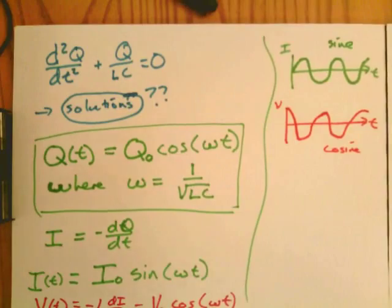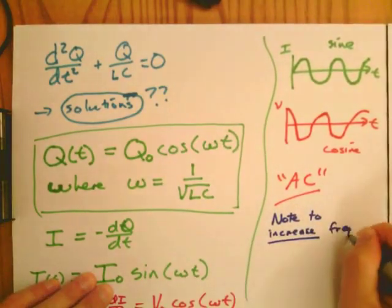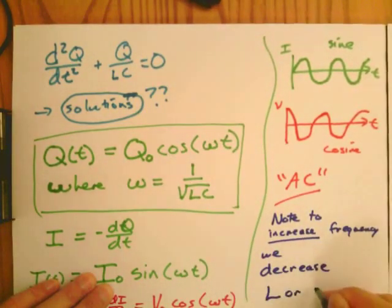So this kind of voltage is known as AC, alternating current. And note that to increase the frequency, you have to decrease either L or C.